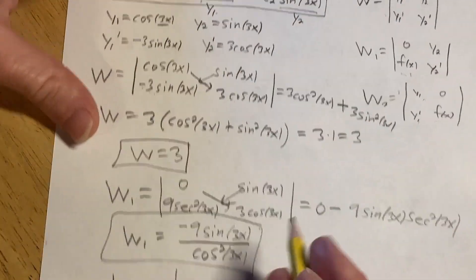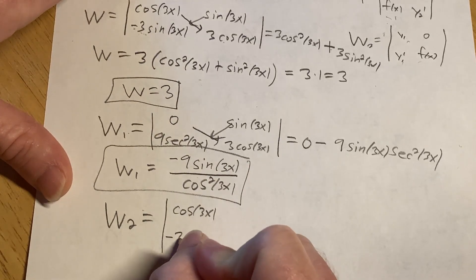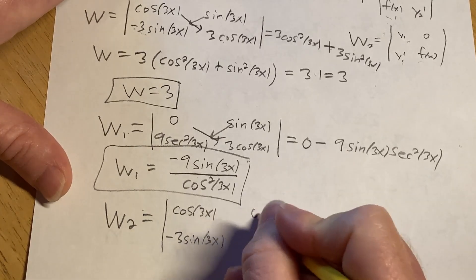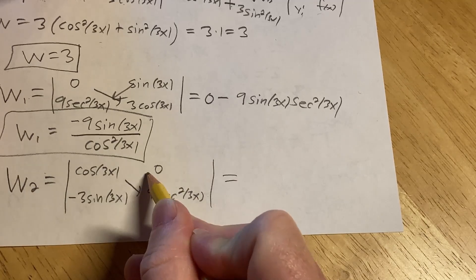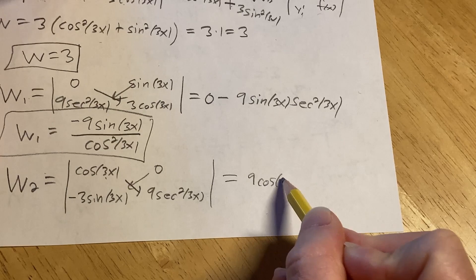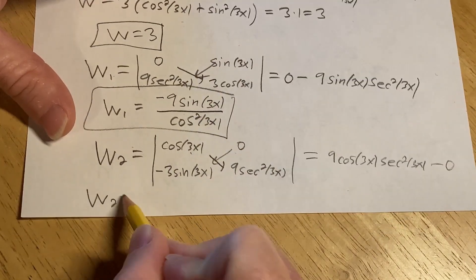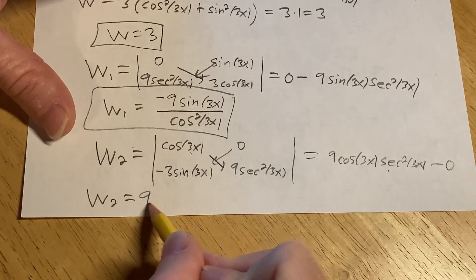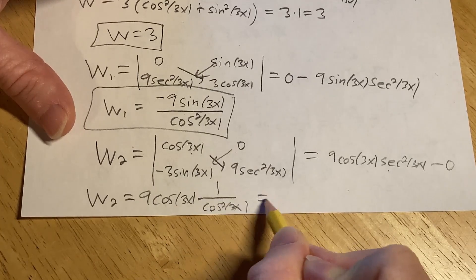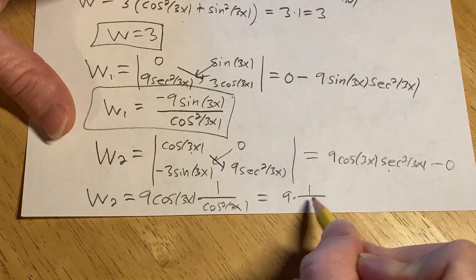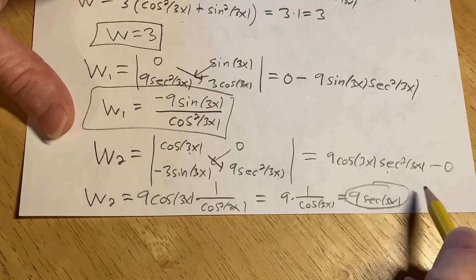So w sub 2, it's going to be cosine 3x, negative 3 sine 3x, and then 0, 9 secant squared 3x. That's equal to multiply, subtract, multiply. So cosine times that will be 9 cosine 3x secant squared 3x, minus 0, because this is 0. So w sub 2 is equal to 9 cosine 3x times 1 over cosine squared 3x. We lose a copy of cosine, so it'll be 9 times 1 over cosine 3x. So it'll be 9 secant 3x. And that's w2.